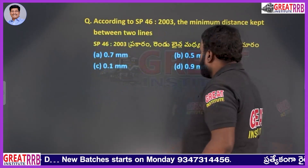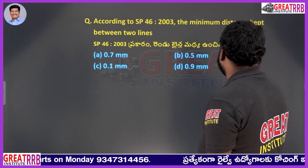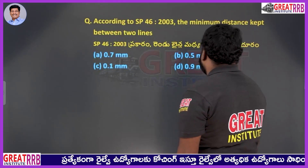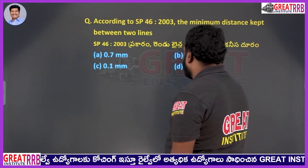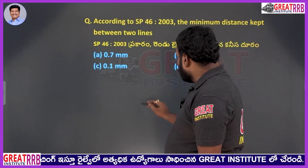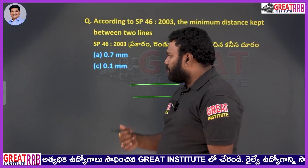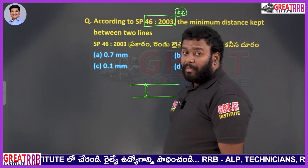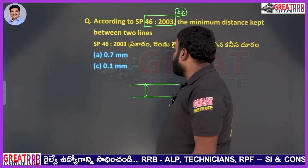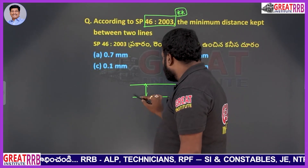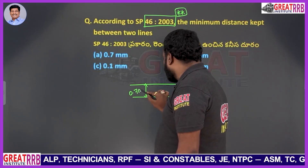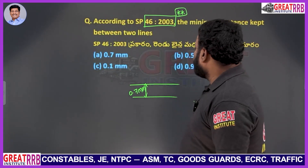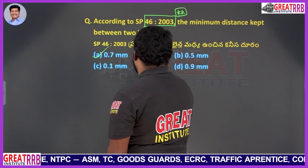Moving to the next question. According to SP46-2003, the minimum distance kept between two lines is: A 0.7 mm, B 0.5 mm, C 0.1 mm, D 0.9 mm. The standard answer is 0.7 mm, so option A will be the right answer for this question.